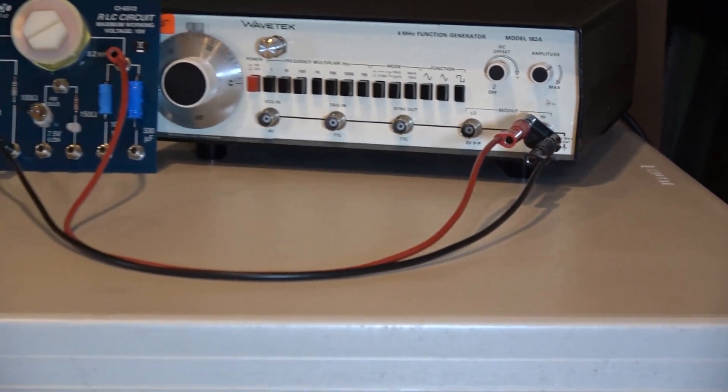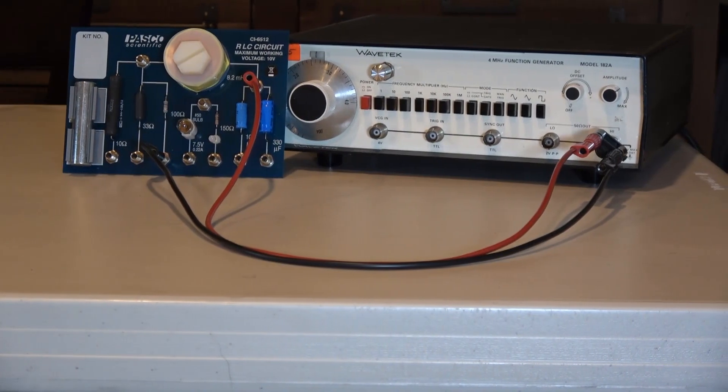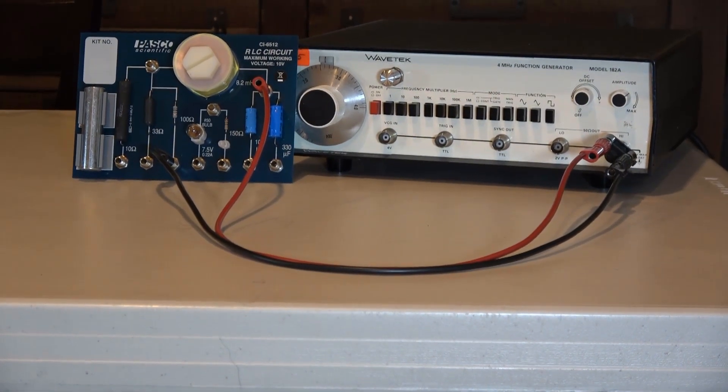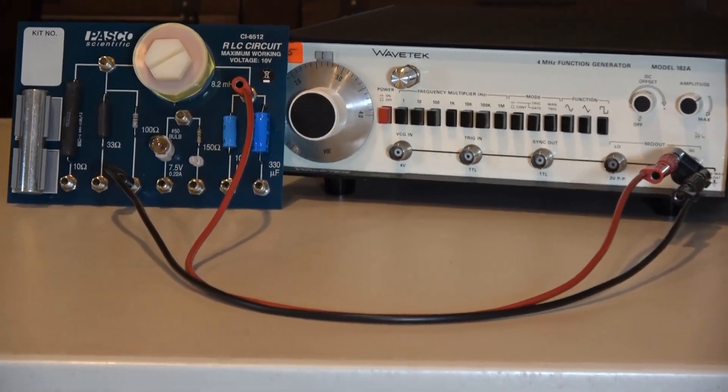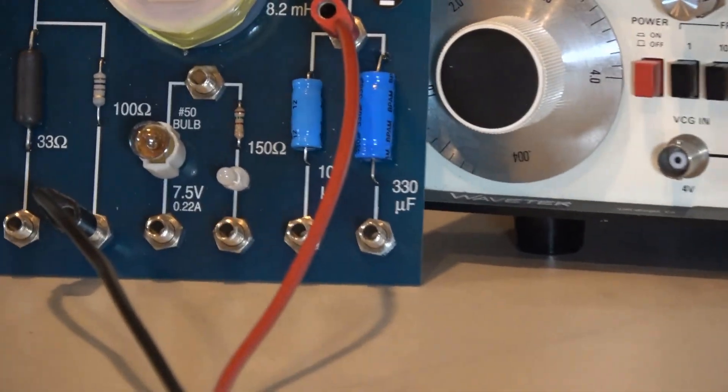This output from our function generator is going to our RL circuit. We're going to use the square wave that it generates to measure the time constant of our circuit.